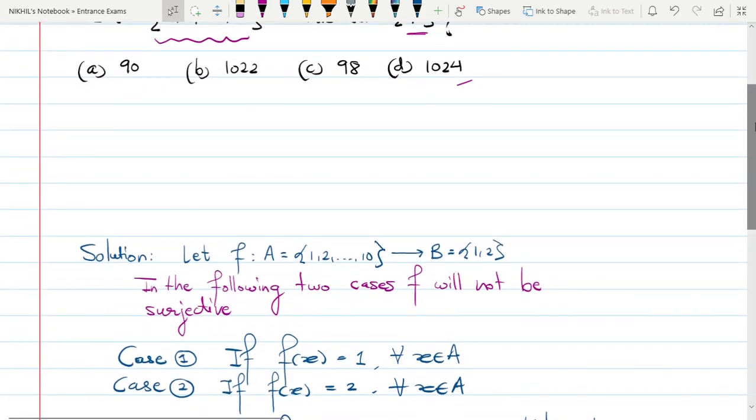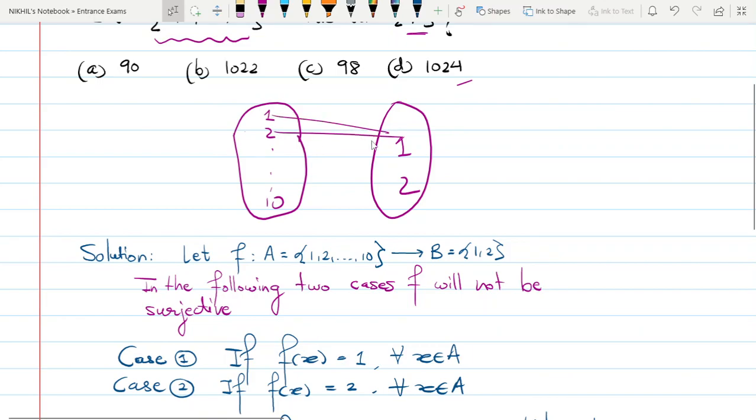So let's try to see this problem now. It's a very simple problem. If you see it like this, suppose your A is 1, 2 till 10, and your B is 1, 2. In which case this map will not be going to be surjective? If I map all my elements to 1, then in this particular case for the element 2, there is no preimage.